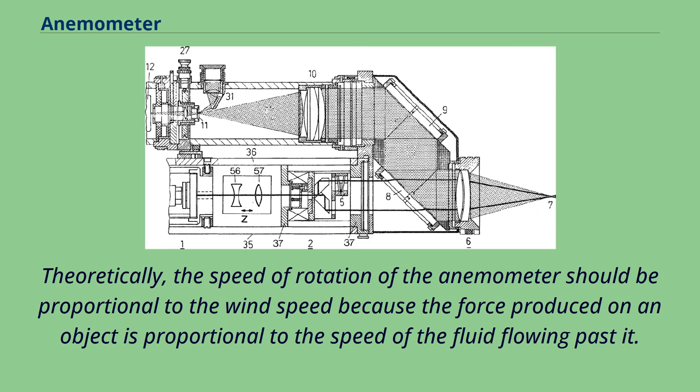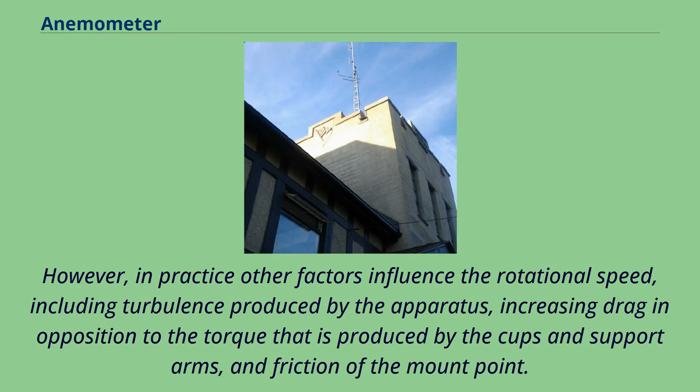Theoretically, the speed of rotation of the anemometer should be proportional to the wind speed because the force produced on an object is proportional to the speed of the fluid flowing past it. However, in practice other factors influence the rotational speed, including turbulence produced by the apparatus, increasing drag in opposition to the torque that is produced by the cups and support arms, and friction of the mount point.